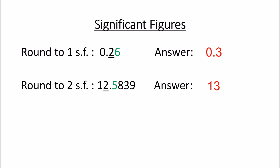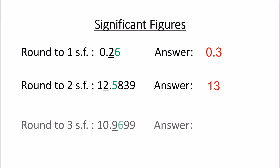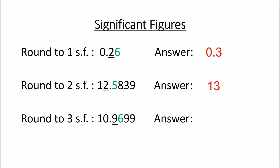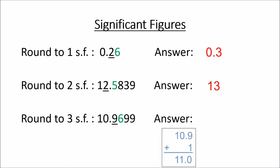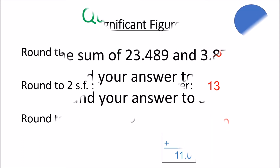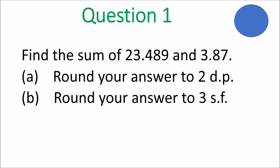Remember, you're only looking at the digits that are significant for significant figures. Round to three significant figures: 10.9699. Now that 0 in the middle is significant, so you count it. So it's 1, the 0, and the 9. At the back of the 9 is a 6, so you have to add a 1 to 10.9 — it becomes 11.0. So three significant figures, that answer would be 11.0.